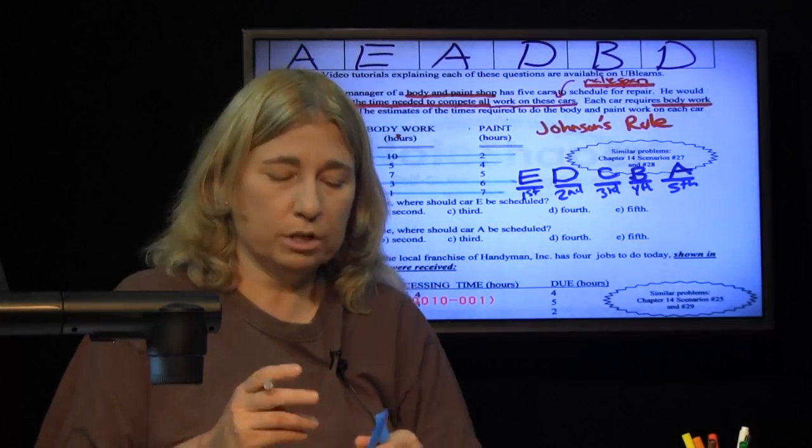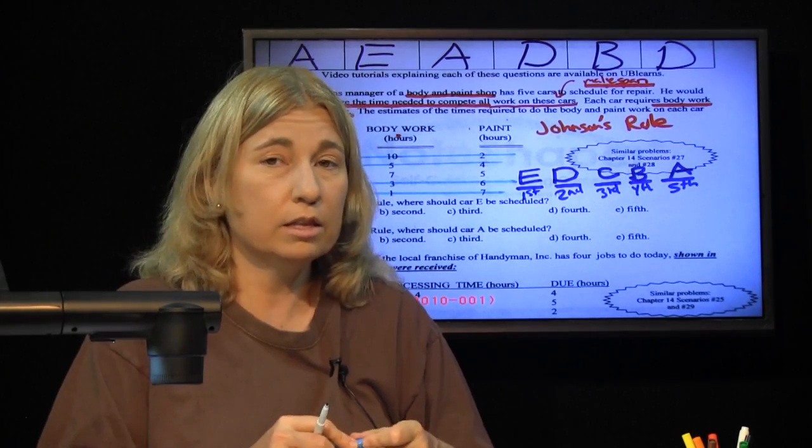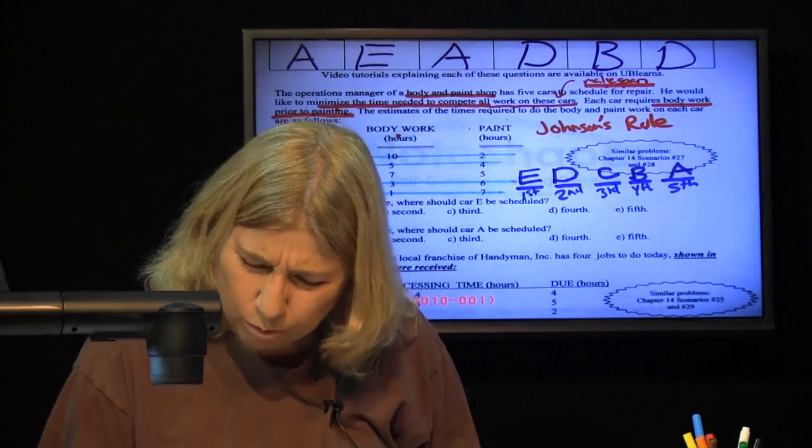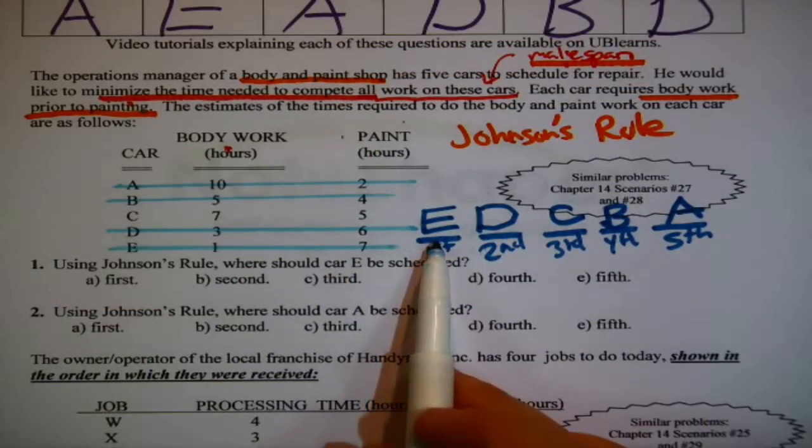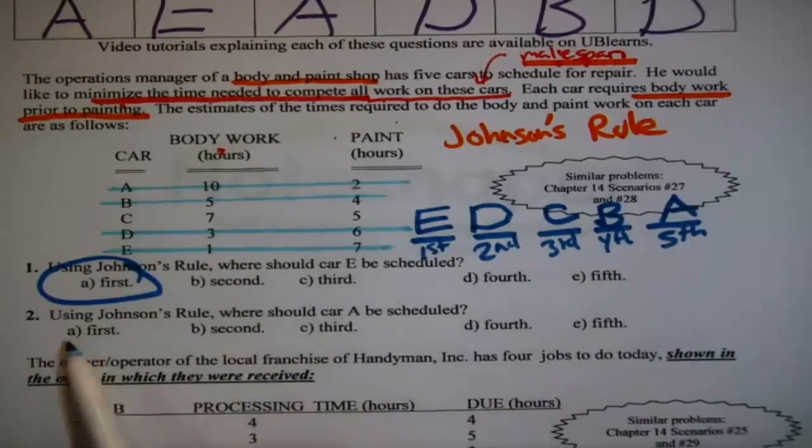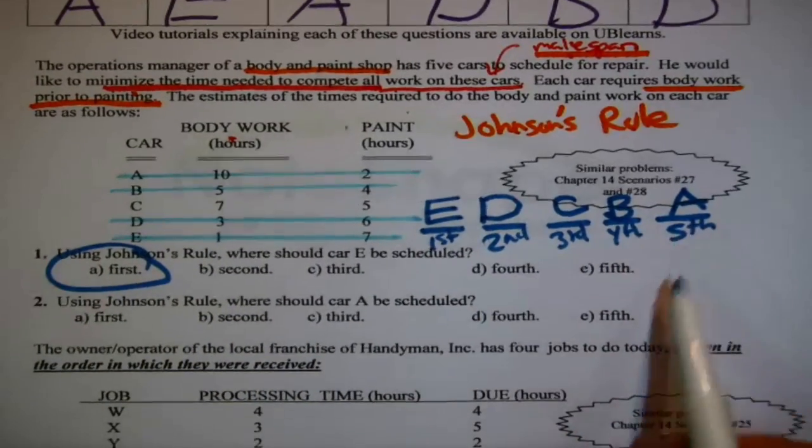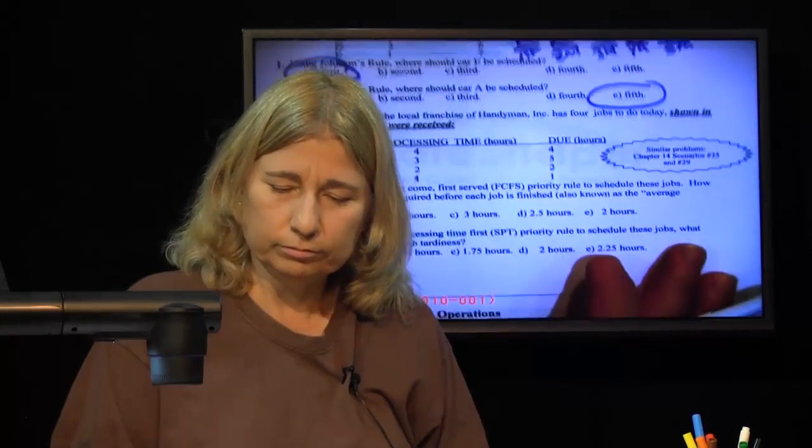Here's our Johnson's Rule sequence that if you work on the cars, body work and then paint in this order, it will get everything done as soon as possible. Now, what are the questions? Using Johnson's Rule, when should car E be scheduled? First. Using Johnson's Rule, when should car A be scheduled? Last, fifth place. Done.